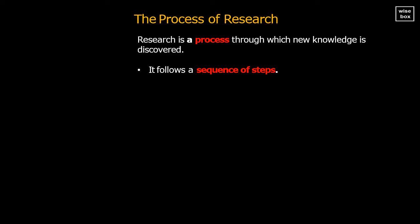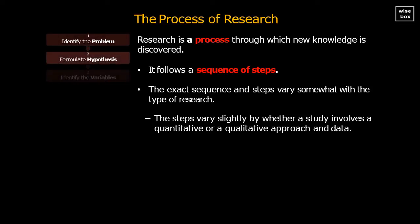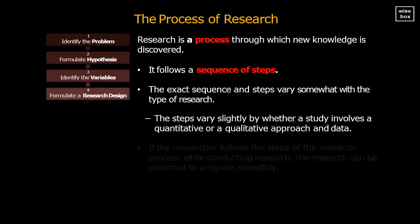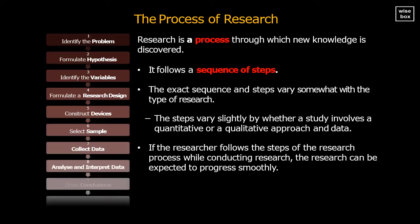The Process of Research. Research is a process through which new knowledge is discovered. It follows a sequence of steps. The exact sequence and steps vary somewhat with the type of research. The steps vary slightly by whether a study involves a quantitative or qualitative approach and data. If the researcher follows the steps of the research process while conducting research, the research can be expected to progress smoothly.